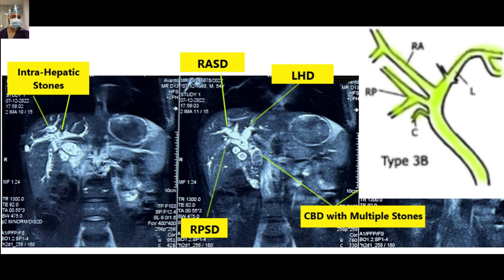As mentioned, we will cover a detailed talk on biliary anatomy — Type 1, Type 2 — in another video tutorial. For now, just remember this configuration: this is Type 3B, a tri-confluence arrangement. The clinical implication of this anatomy is that you have to clear the right posterior sectoral duct separately, otherwise the stone burden will be left behind. This is also demonstrated in the live surgery.